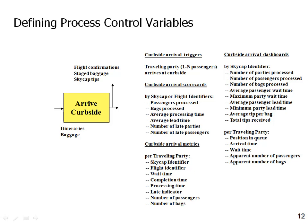I manage the process using the dashboard. For every traveling party, the dashboard might show: position in the queue, when they arrived, how long they've been waiting, the apparent number of passengers, and the apparent number of bags. I say 'apparent' because I might see three people with six bags — I'd presume three passengers and six bags — but maybe only two are traveling and two bags are carry-ons. It's only the apparent numbers I can gather until I actually process the party. By each skycap, the dashboard shows: parties processed, passengers processed, bags processed, average passenger wait time, maximum party wait time, average passenger lead time, minimum party lead time, average tip per bag, and total tips received so far in the shift.